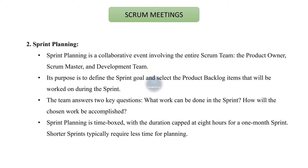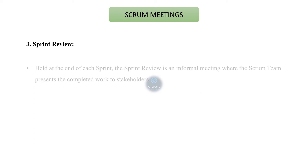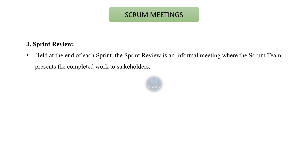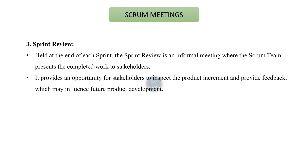The third Scrum meeting is the sprint review, held at the end of each sprint. The sprint review is an informal meeting where the Scrum team presents the completed work to stakeholders. It provides an opportunity for stakeholders to inspect the product increment and provide feedback, which may influence future product development.